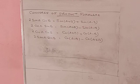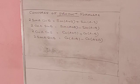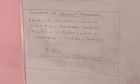These are the four converse product formulas. First formula: 2 sin A cos B = sin(A+B) + sin(A-B). The second result: 2 cos A sin B = sin(A+B) - sin(A-B). The third result: 2 cos A cos B = cos(A+B) + cos(A-B). Fourth: 2 sin A sin B = cos(A-B) - cos(A+B).